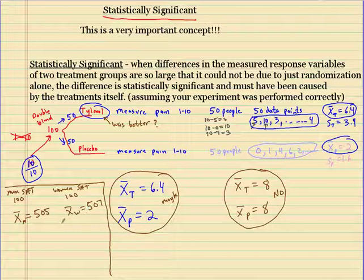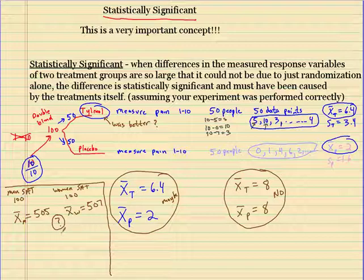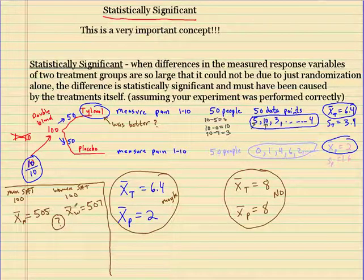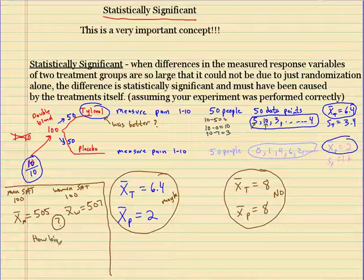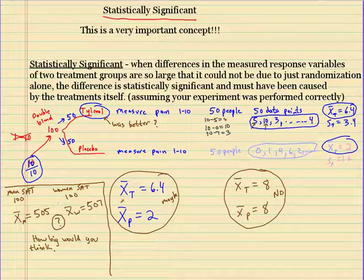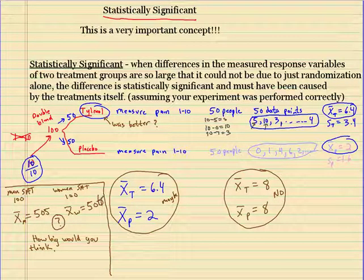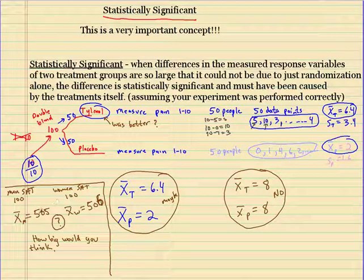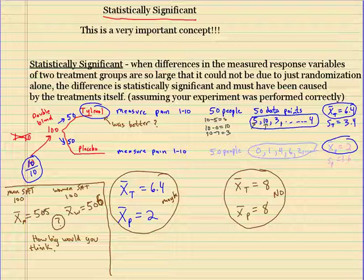So the difference is only two. So we'd have to do some statistical analysis that we'll learn later. But you know, just to get an idea, probably not. So the question is, how big would you think the difference would want to be? And now the reason that this may not be, let me just make this a little bit more, not statistically significant. So I'll say that the women were 506 and the guys were 505. Well, this could have happened just by chance. This could have happened just by chance.